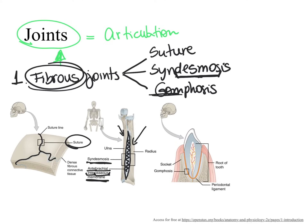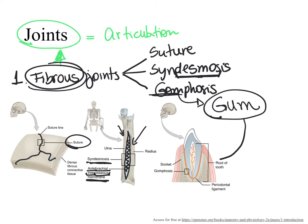Gomphosis fibrous joint makes you recall the word 'gum,' because the gomphosis fibrous joint is found deep inside the gum — it is found between the root of the tooth and the bony socket.